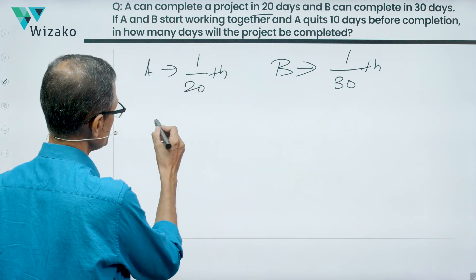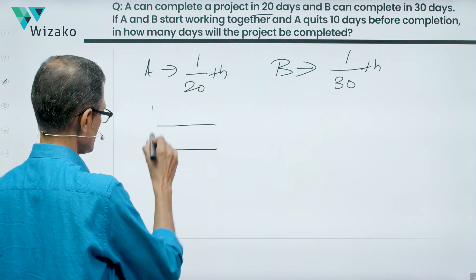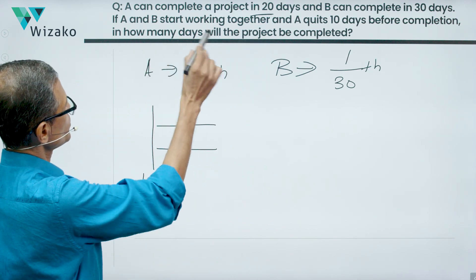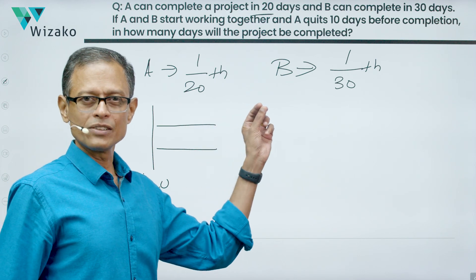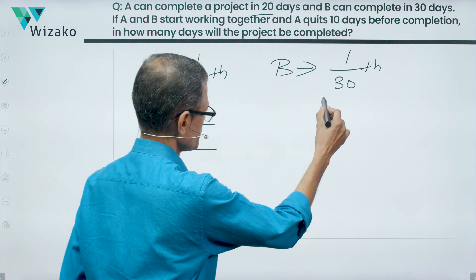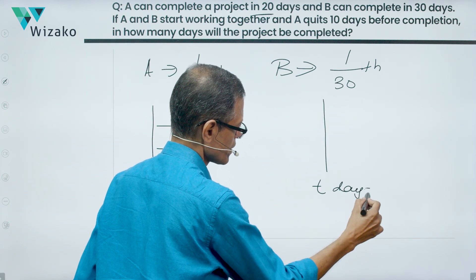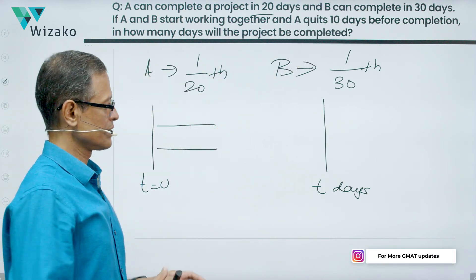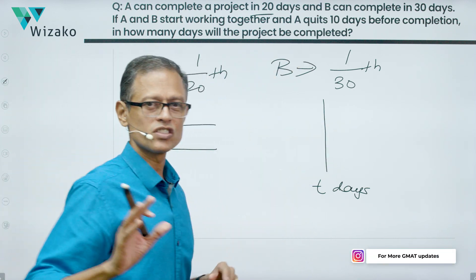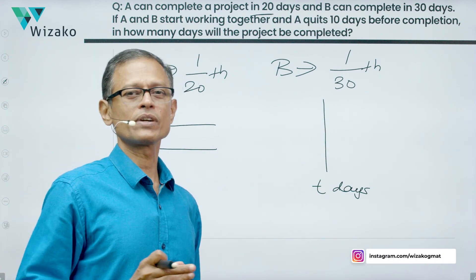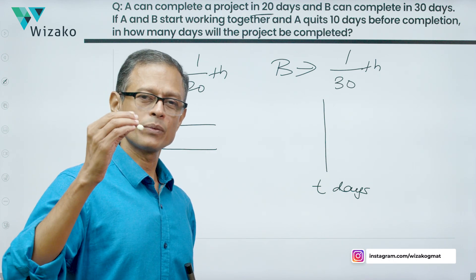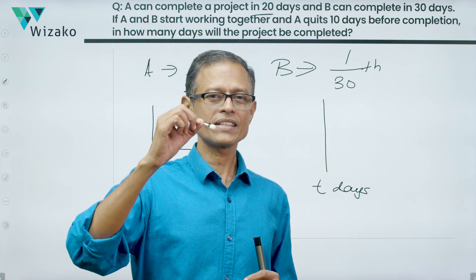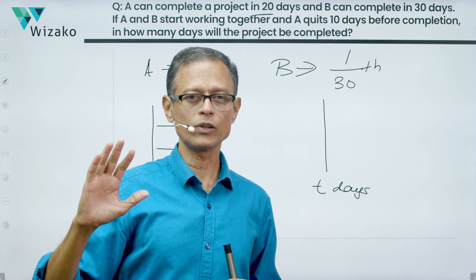Now it says A and B work together starting at timeline 0. A and B start working together. Do they finish the project together? No. Let's say the project gets done in T days. A quits 10 days before the completion of the project. If it takes 30 days to finish the project, A quits 10 days before it gets completed, which means A quits on the 20th day. If it takes 12 days to complete, A quits at the end of 2 days, leaving the last 10 days only to B.